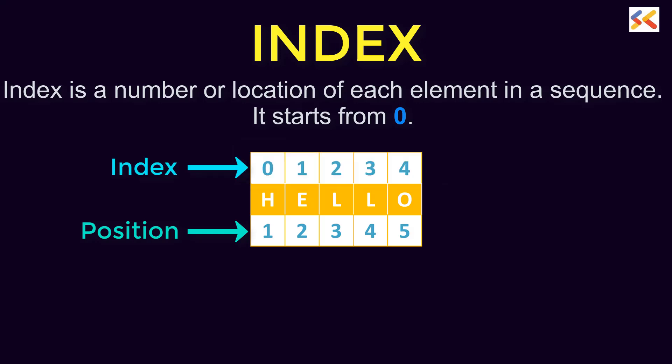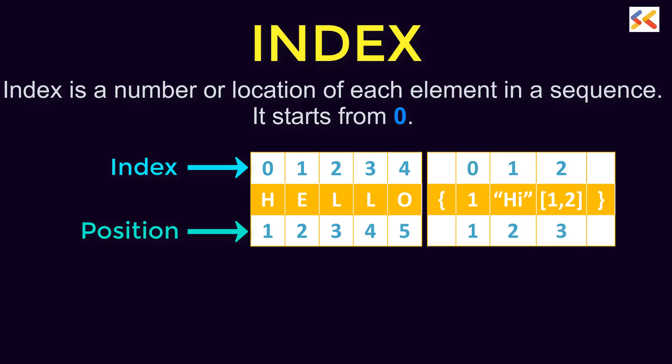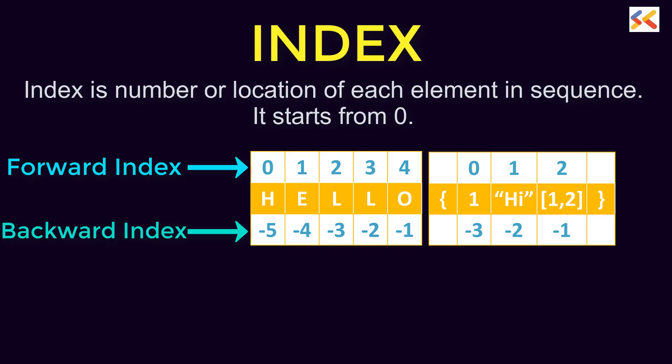But index always starts from 0. So H is at index 0, E at 1 and so on. It's similar for list and tuple. Note if there is a nested list or tuple, each is one element. This is called forward indexing in Python. Similarly, we have backward indexing too. Here the last element is at index minus 1, second last at minus 2 and so on. You can refer to an element by using forward index or backward index.